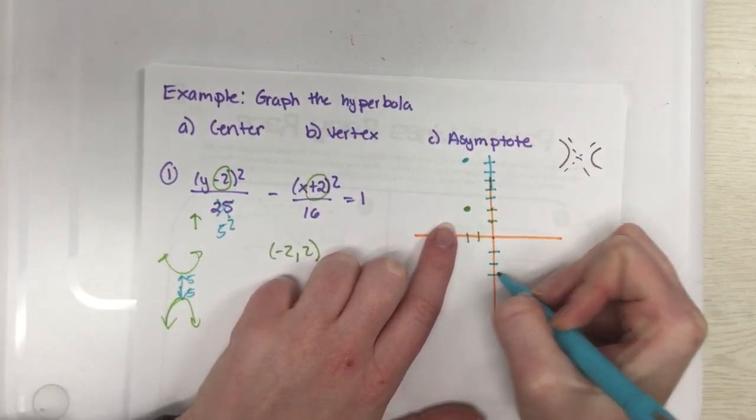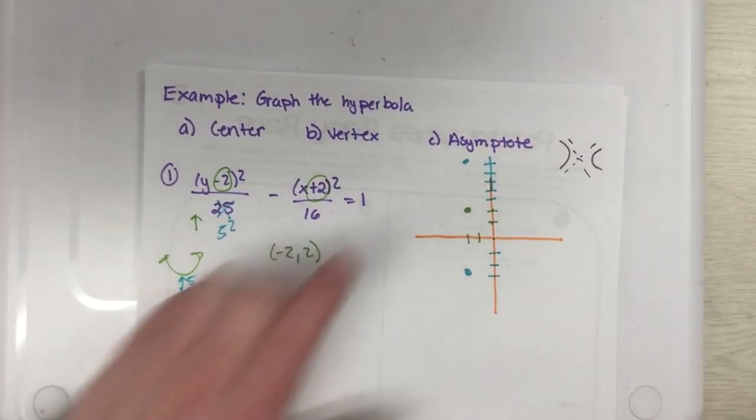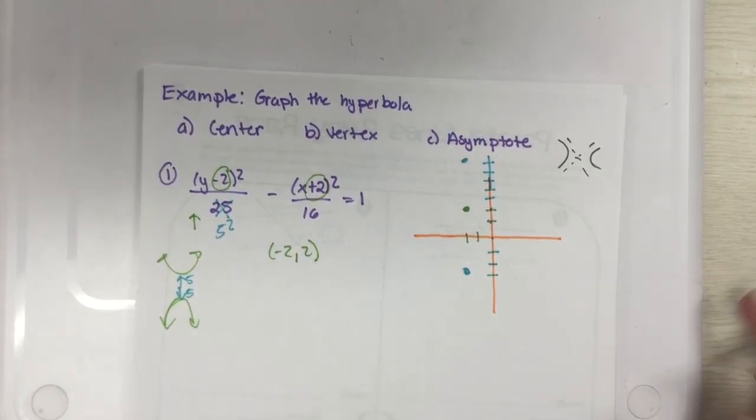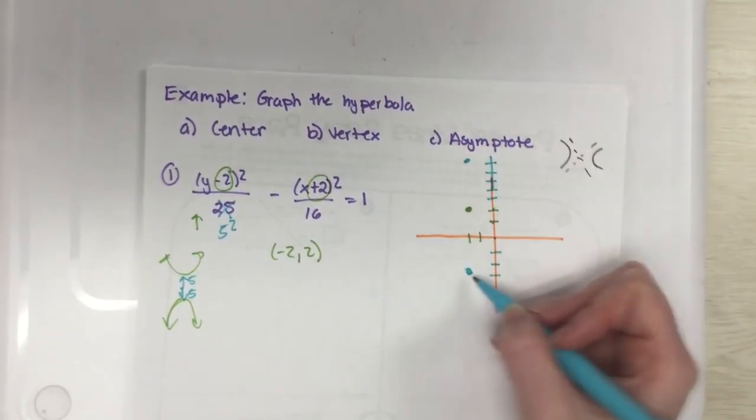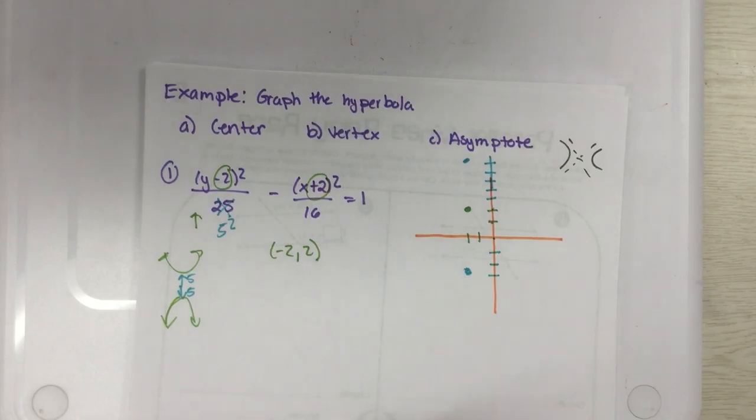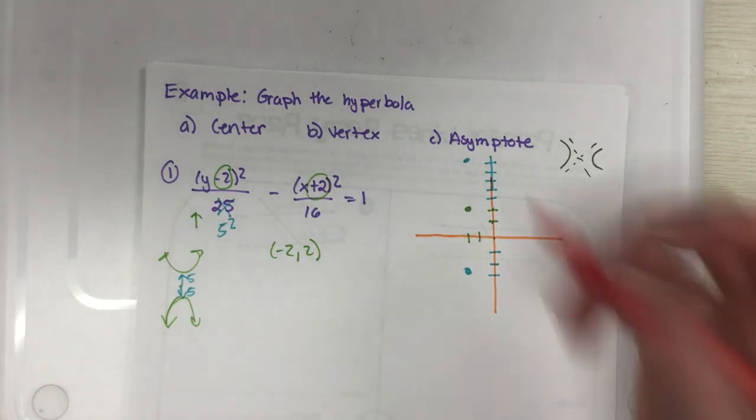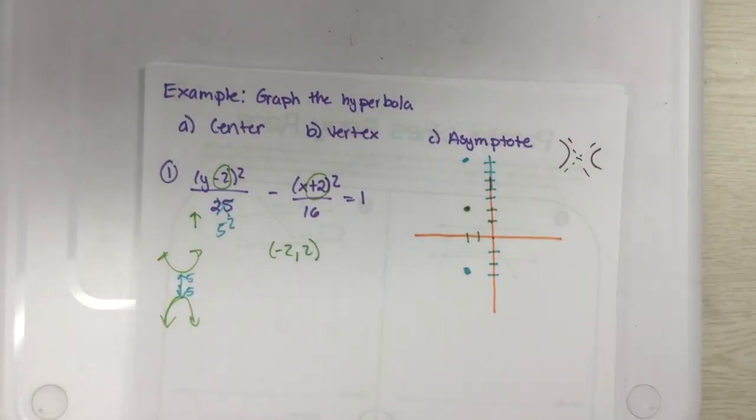I'm going to go ahead and count up 5: 1, 2, 3, 4, 5, so there's my first one. Then I need to go down: 1, 2, 3, 4, 5. So there are my two vertices and we know it's going to go something like this and this, but I need to graph my asymptotes next.